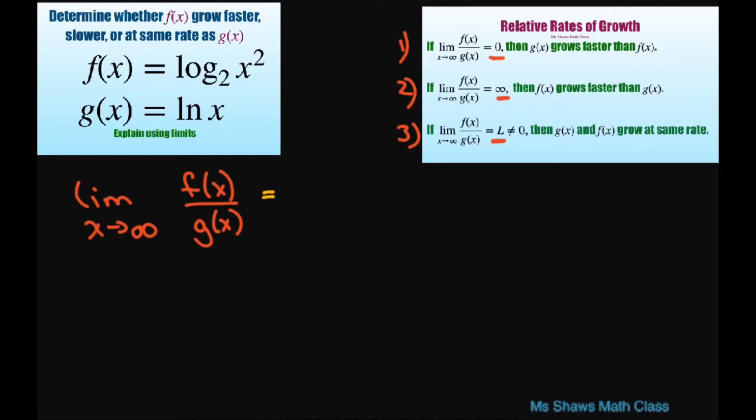So let's substitute in. I'm going to write this as the limit as x approaches infinity. I'm going to use my power rule for logs and bring this in front. So we'll have 2 times log base 2 of x divided by ln of x.